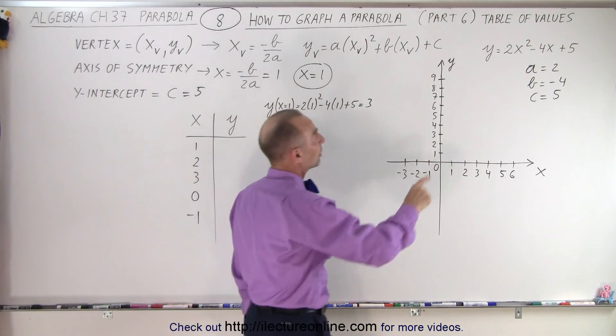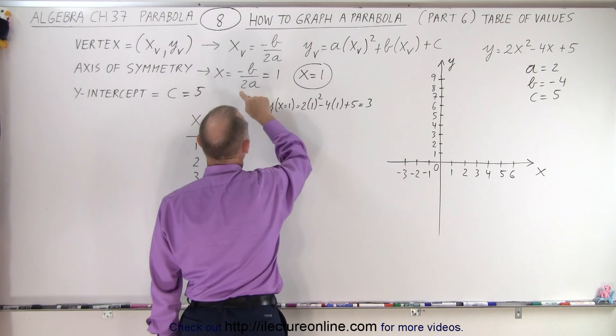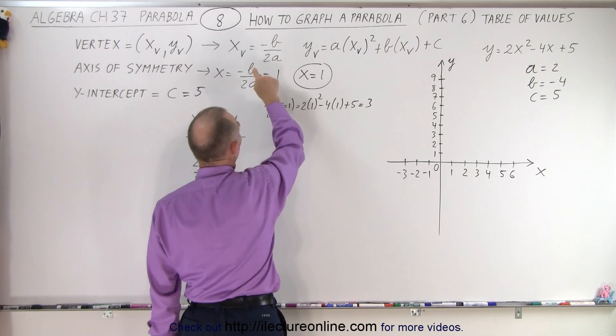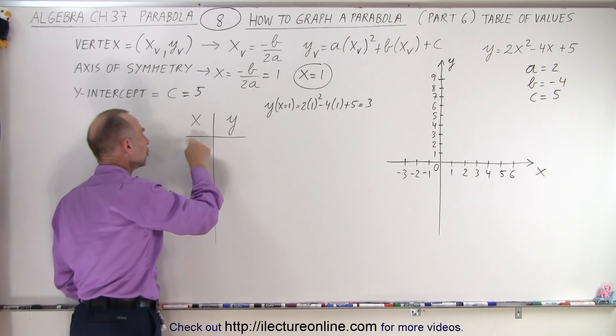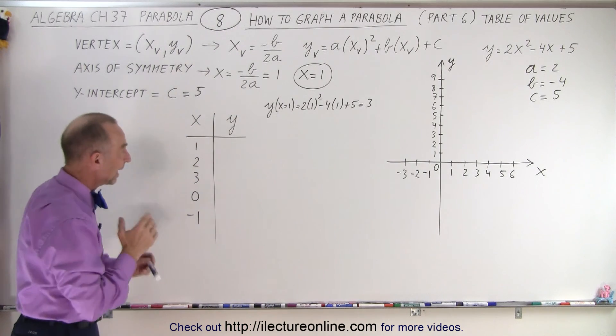Because b is equal to negative 4, so negative times negative 4 is 4, and 2 times 2 is 4. 4 divided by 4 equals 1, and so that will be the first value that we use on our table of values.